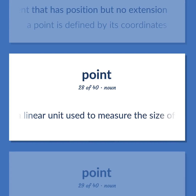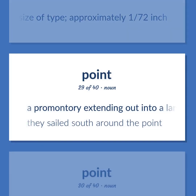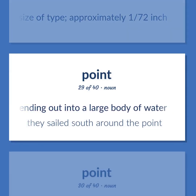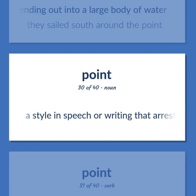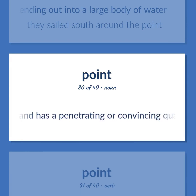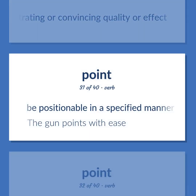Point: A linear unit used to measure the size of type, approximately 1/72nd of an inch. A promontory extending out into a large body of water. Example: They sailed south around the point. A style in speech or writing that arrests attention and has a penetrating or convincing quality or effect. Be positionable in a specified manner. Example: The gun points with ease.